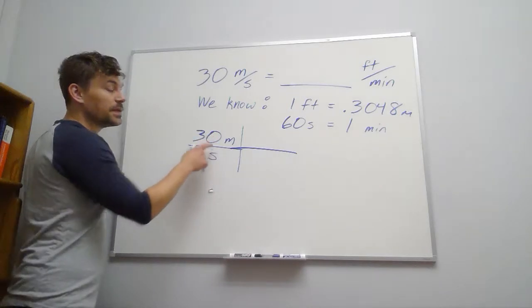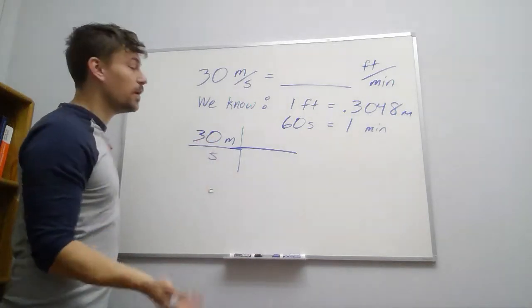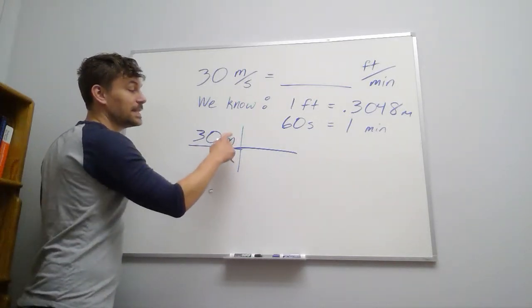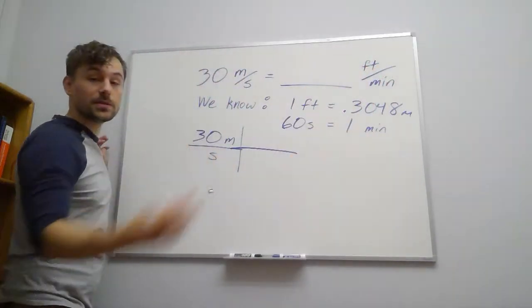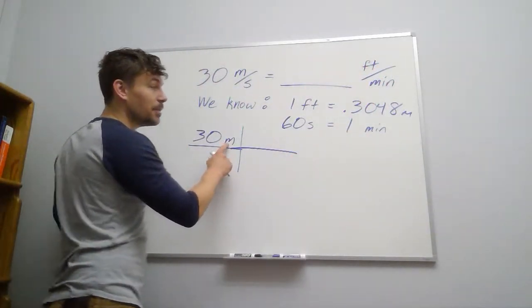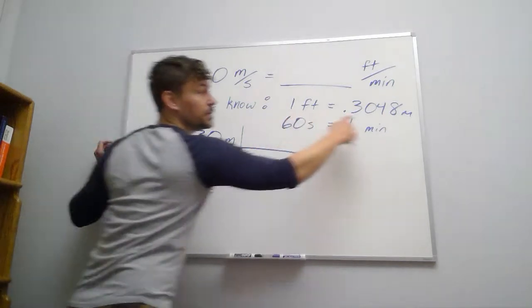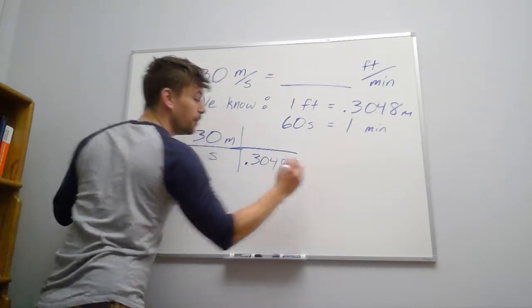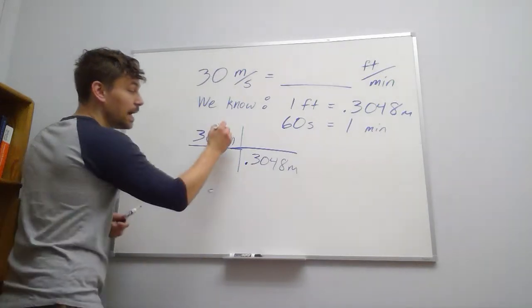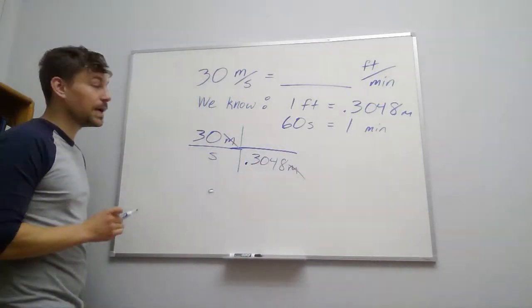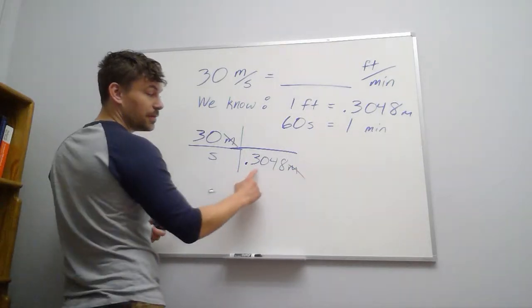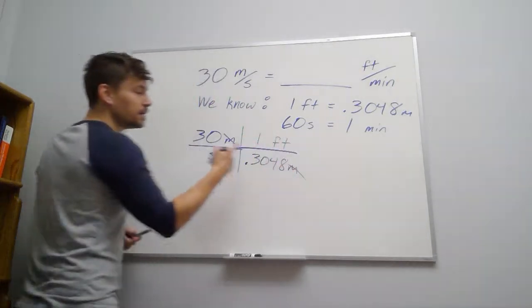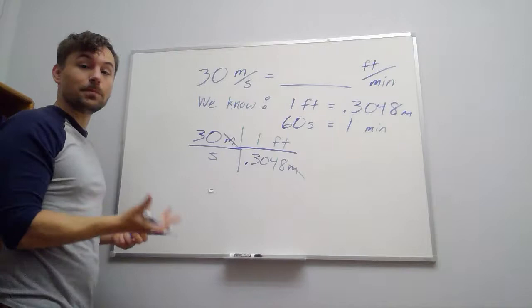So I need to get both of these units changed. Let me start with one of those. It doesn't matter which one you start with. Suppose we start with meters. I have meters on the top. I don't have meters over here, so I want those to go away. So if I have meters on the top, I better have meters on the bottom. So we're going to use our first conversion, so 0.3048 meters, and then that's going to cancel out our units of meters. So we got rid of those, but we have to make an exchange. So 0.3048 meters is the same as one foot. So we picked up our units of feet on top. That's exactly what we want.